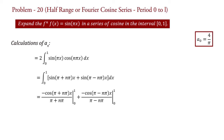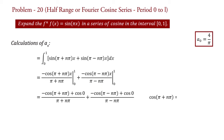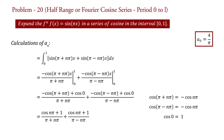Substituting the values of limits: aN equals minus cos(π + nπ) plus cos(0) upon (1+n)π, plus minus cos(π − nπ) plus cos(0) upon (1−n)π. Since cos(π + nπ) equals minus cos(nπ) and cos(π − nπ) equals minus cos(nπ), and cos(0) equals 1, by putting these values we get aN equal to cos(nπ) plus 1 upon (π + nπ) plus cos(nπ) plus 1 upon (π − nπ).